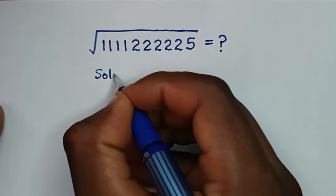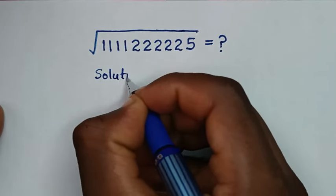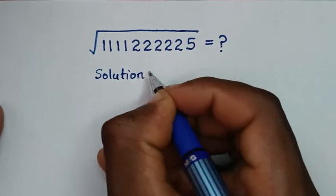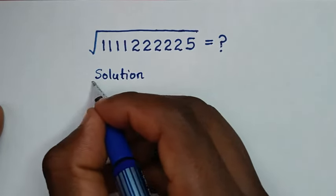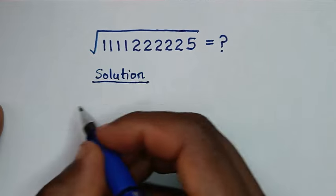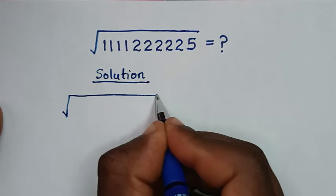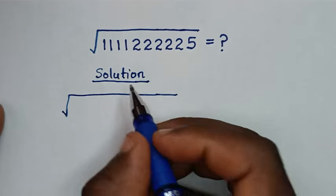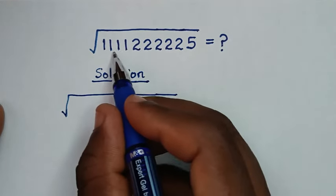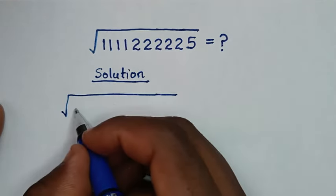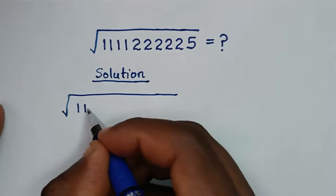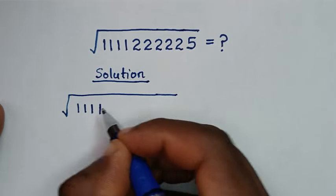Now, solution. From our problem, which is square root of 1s, we have 1, 2, 3, 4. So, 1, 1, 1, 1.